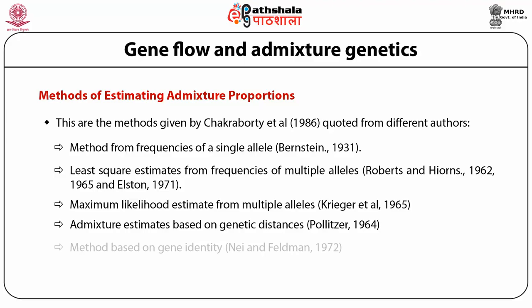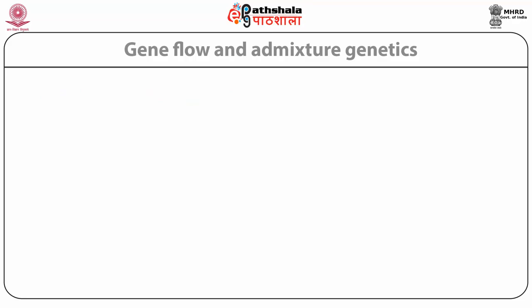The last method in the list is a method based on genetic identity. The problem with admixture estimates based on genetic distance can be circumvented if one considers a suitable measure of genetic similarity instead. For example, if genetic similarity is defined by gene identity — the probability that two genes chosen at random from one or more populations are identical — it can be expressed as a linear function of admixture proportions.